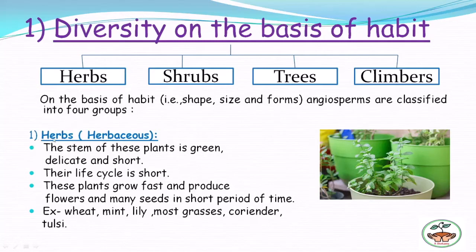The first group is herbs, also called herbaceous plants. Herbs are plants with a weak stem — the stem is green, delicate, and short. Their life cycle is short; these plants grow fast and produce flowers and many seeds in a short period of time. Here, this is a milk plant — it hardly attains a height of more than one meter and the stem is delicate and green. Common examples of herbs are wheat, mint, lily, most grasses, coriander, and tulsi.